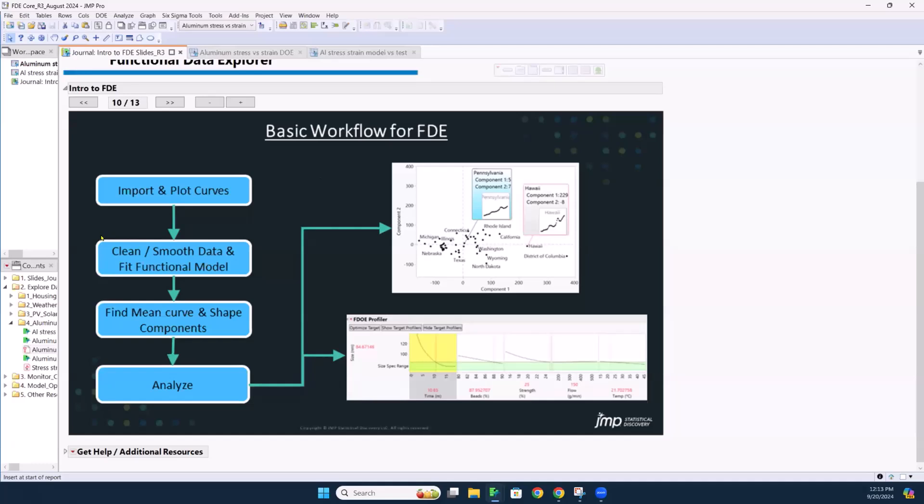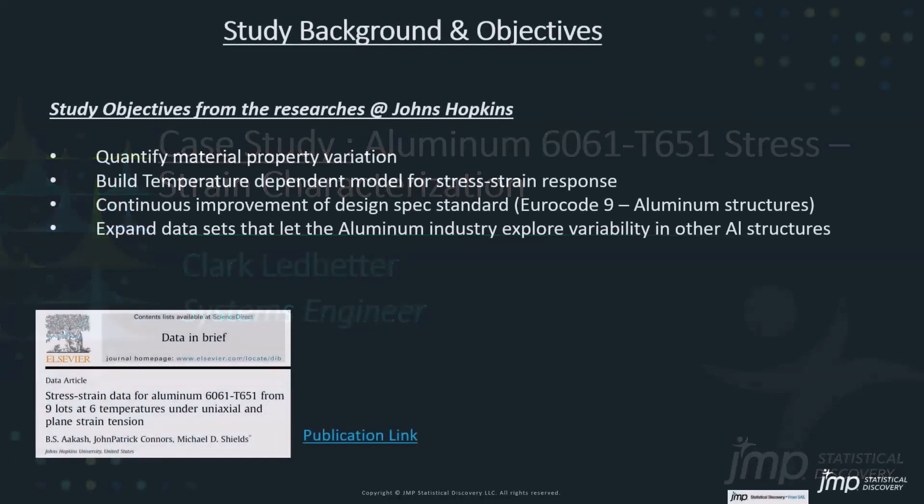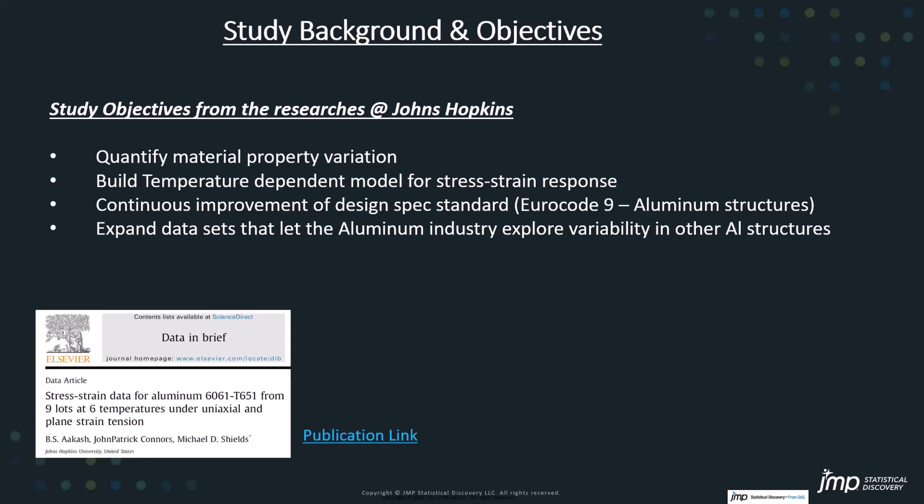Let's actually go look at our first case study. And let me introduce you. This is fresh, hot off the press. I just picked up this data set earlier this week. And it is a case study looking at aluminum 6061 T65 anneal. It's a stress strain characterization. So bear with me. I think I got something for us to look at. The researchers were at the Johns Hopkins University.